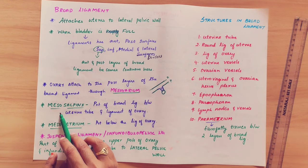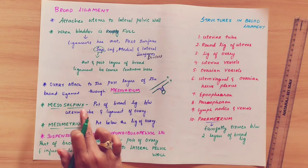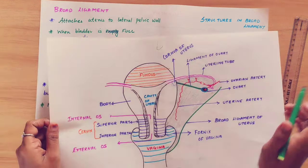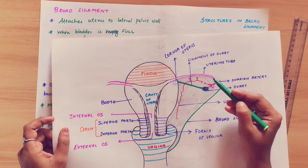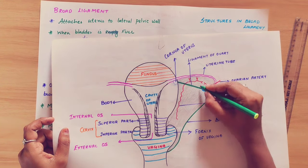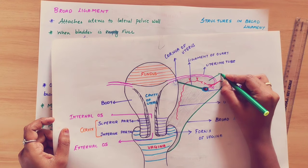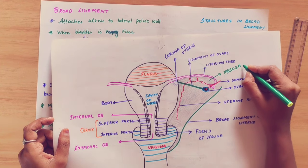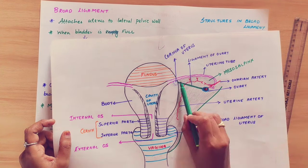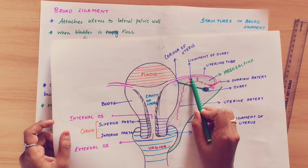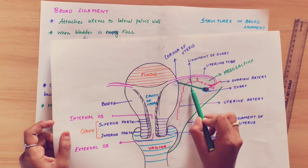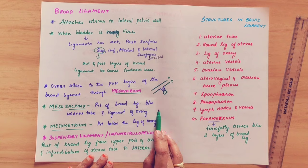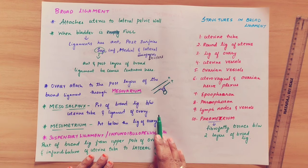Coming to the mesosalpinx: this relates to the uterine tube, otherwise known as the fallopian tube. The mesosalpinx is the part of the broad ligament located between the uterine tube and the ligament of the ovary.